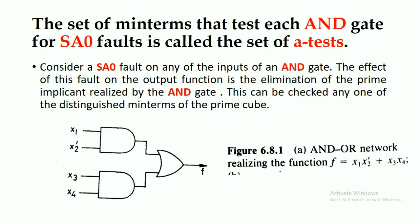Now we will find out the stuck-at-zero fault within the circuit. The set of minterms that test each AND gate for stuck-at-zero fault is called the set of A tests. Consider a stuck-at-zero fault on any of the inputs of the AND gates. The effect of this fault on the output function is the elimination of the prime implicant realized by that AND gate. For example, if there is a stuck-at-zero fault at x2 dash, then this prime implicant will be eliminated.